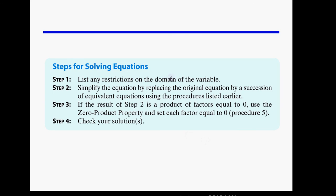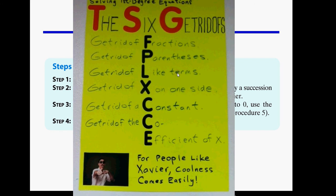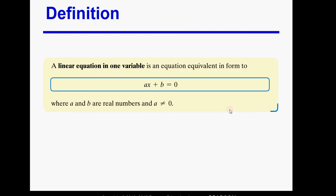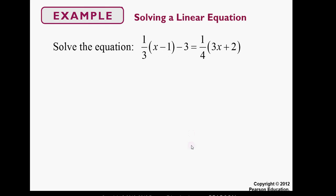Sullivan has his own way of writing the steps, but we prefer the six get rid of because we have an acronym to remember it by — it's pretty much the same thing but simpler and easier to follow. A linear equation is an equation that has x in it but not x squared. More precisely, it's an equation you can write in the form ax + b = 0, with a not equal to 0.